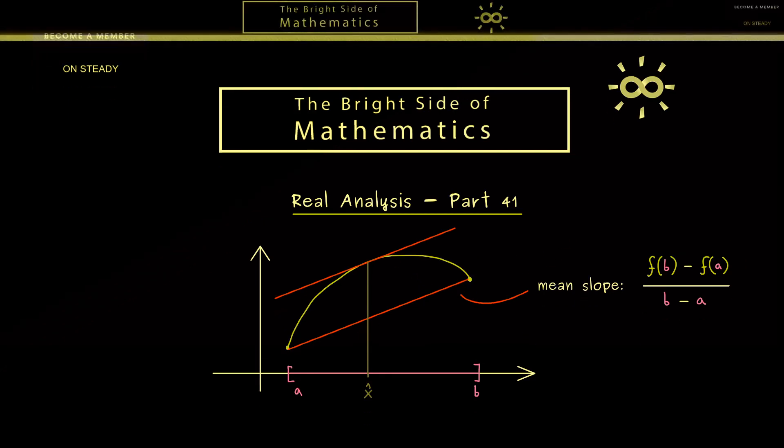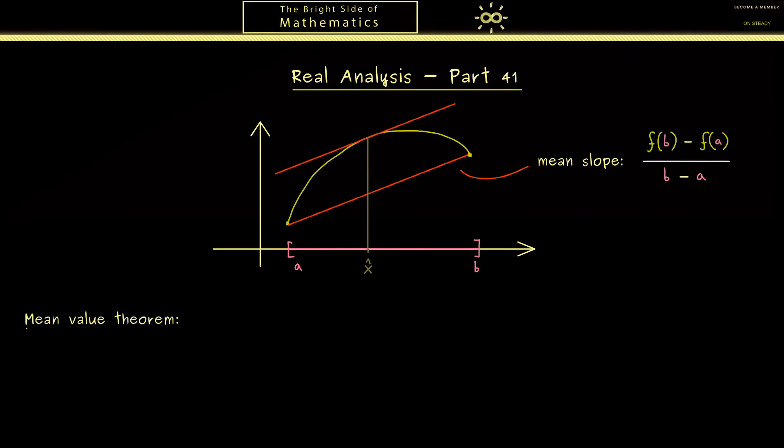At this point we are ready to formulate it. The only assumption we need here is a differentiable function f defined on a compact interval [a,b], where a is strictly less than b. Then the claim is there exists a point x hat in the open interval (a,b), an inner point. And for this point we have the property that f'(x hat) is exactly the mean slope. So you see the whole theorem is very easy to formulate and therefore also to remember.